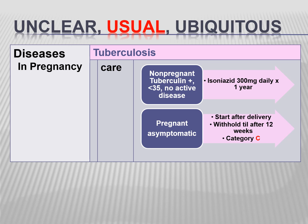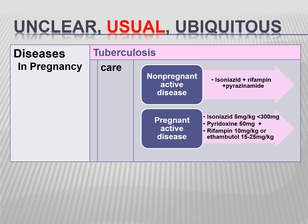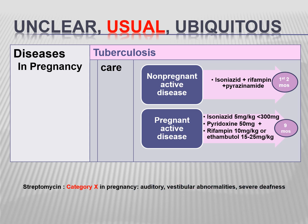For pregnant asymptomatic patients, start INH after delivery and withhold until after 12 weeks — it is Category C. For non-pregnant patients with active disease, give isoniazid, rifampicin, and pyrazinamide. If pregnant with active disease, give isoniazid, pyridoxine, rifampin, and ethambutol. Streptomycin is not given to pregnant patients as it is Category X and can cause auditory-vestibular abnormalities and severe deafness.